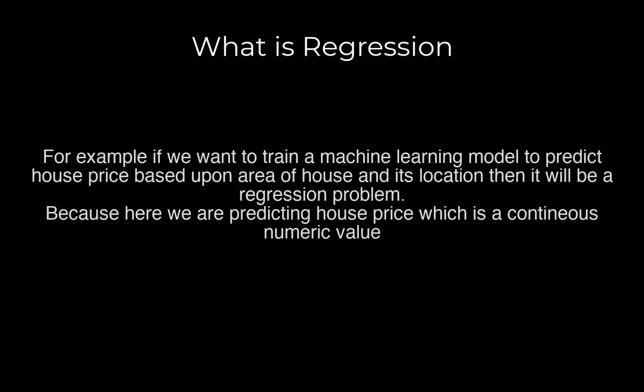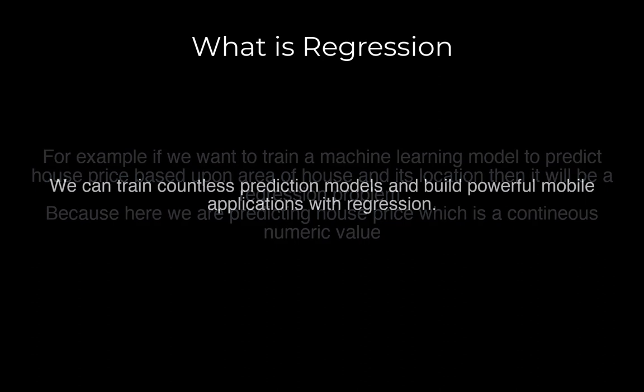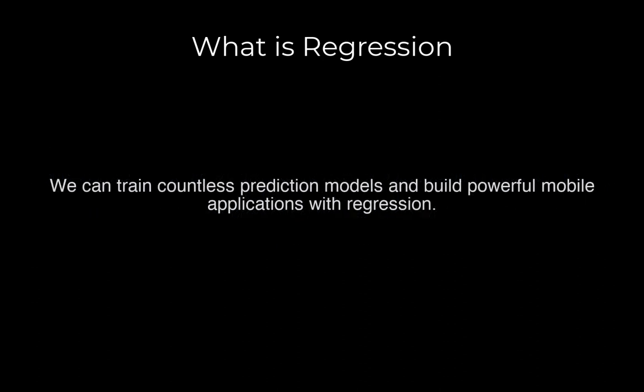For example, if we want to train a machine learning model to predict the price of a house based upon features like the area of the house and its location, then it will be a regression problem because here we are predicting house price, which is a continuous numeric value. Similarly, we can train countless prediction models using regression and build smart mobile applications.